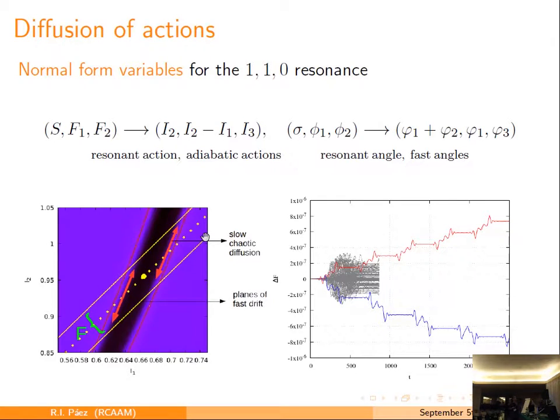We pass to resonant variables. We will transform our actions A1, A2, and A3, and phi1, phi2, and phi3 here in resonant and adiabatic actions and in a resonant angle and fast angle. This will allow to refer to Hamiltonian essentially in the neighborhood of this point. The diffusion will take place along the lines of the resonance, of the separatrix of the resonance.